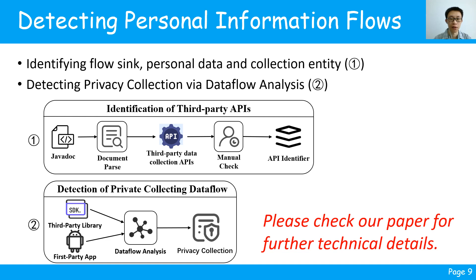In the second phase, we employ a semi-automatic approach to extract all data collection APIs from the Javadoc of third-party libraries. We then manually generate API identifiers to record the collection types. Subsequently, with reference to existing techniques such as FlowDroid, our tool detects all privacy data collection data flows in both the app and the third-party libraries. Please check our paper for further technical details.